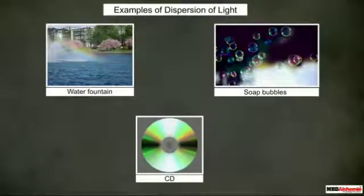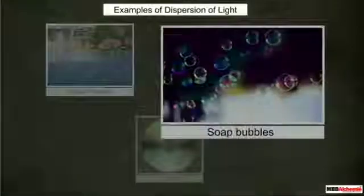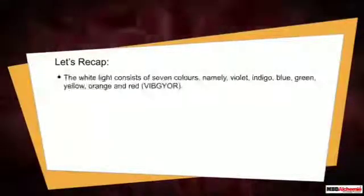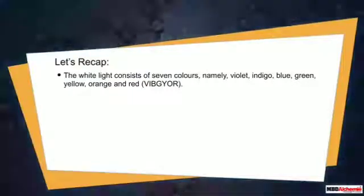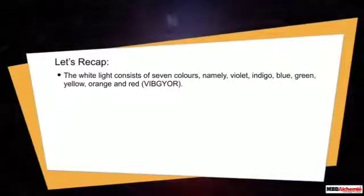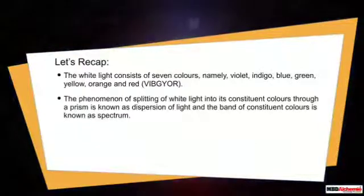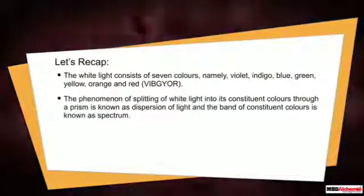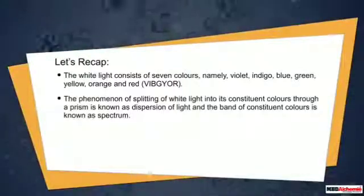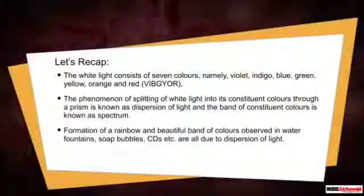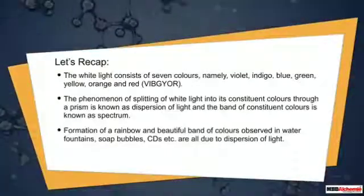We can find several other examples of dispersion of light — such as water fountains, soap bubbles, and CDs. To recap: white light consists of seven colors — VIBGYOR. The phenomenon of splitting of white light into its constituent colors through a prism is called dispersion of light. The band of colors is called a spectrum. The formation of a rainbow, and the beautiful colors seen in water fountains, soap bubbles, and CDs are all due to dispersion of light. Thank you, stay safe — Nirmal Roy signing off.